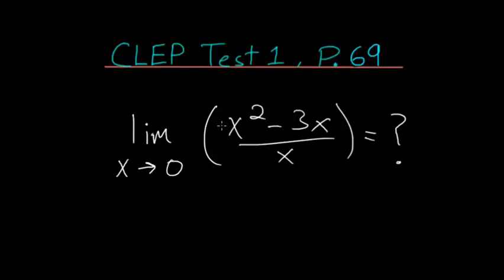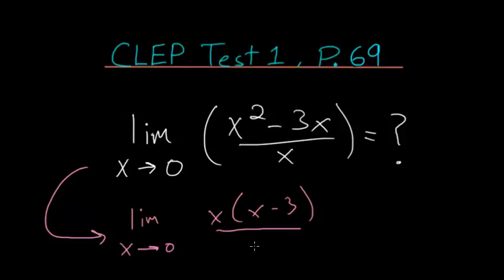we can cancel out the x in the numerator with that in the denominator. So rewriting this with the limit as x approaches 0 of x times x minus 3, after we factored out an x from each of these, all divided by x.